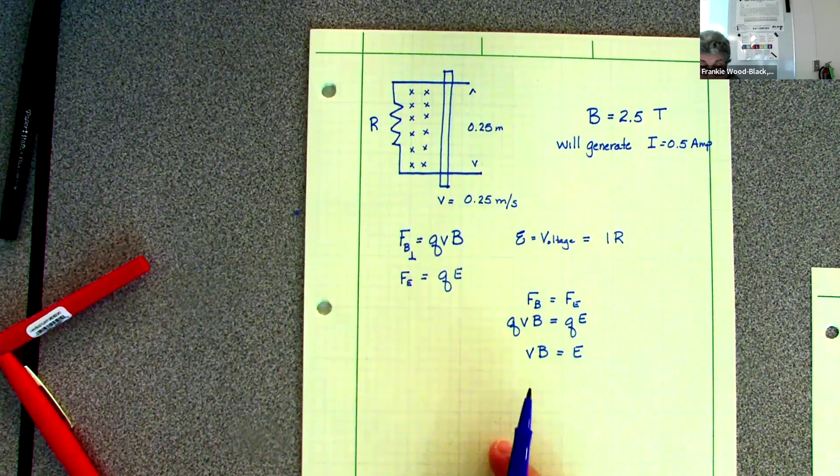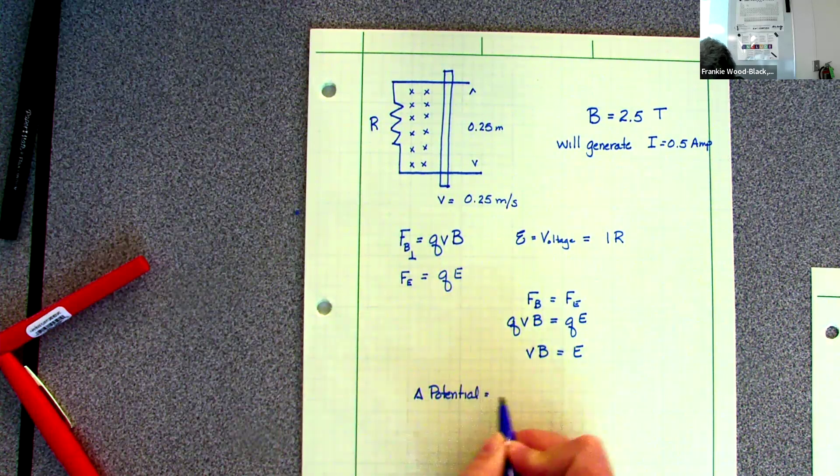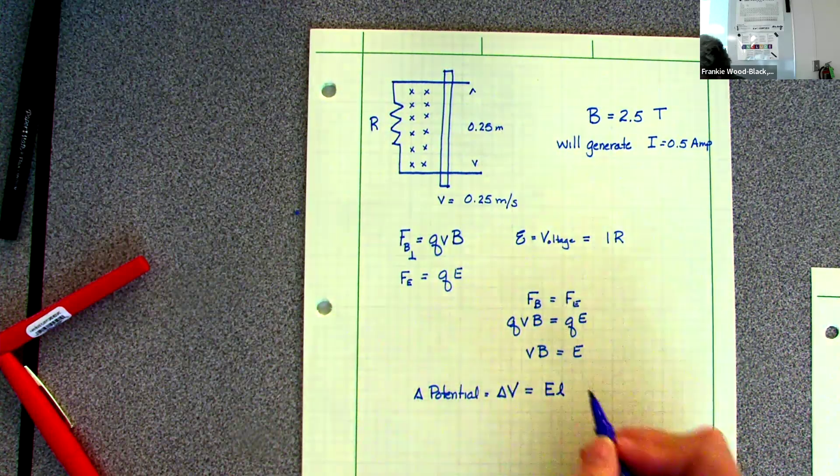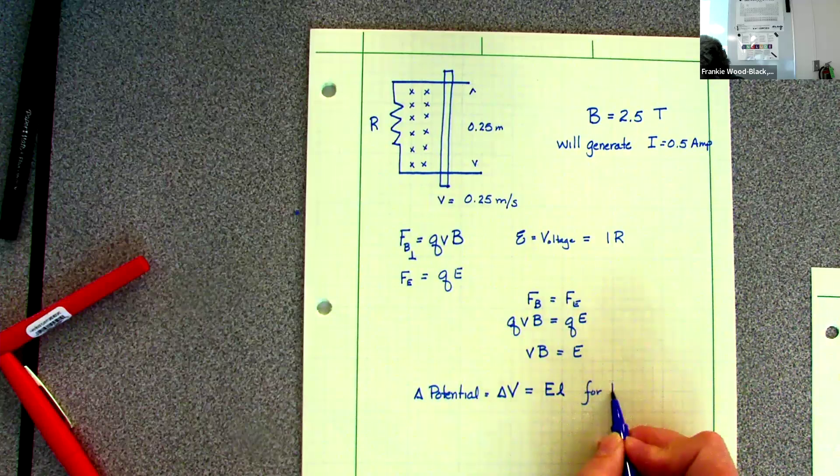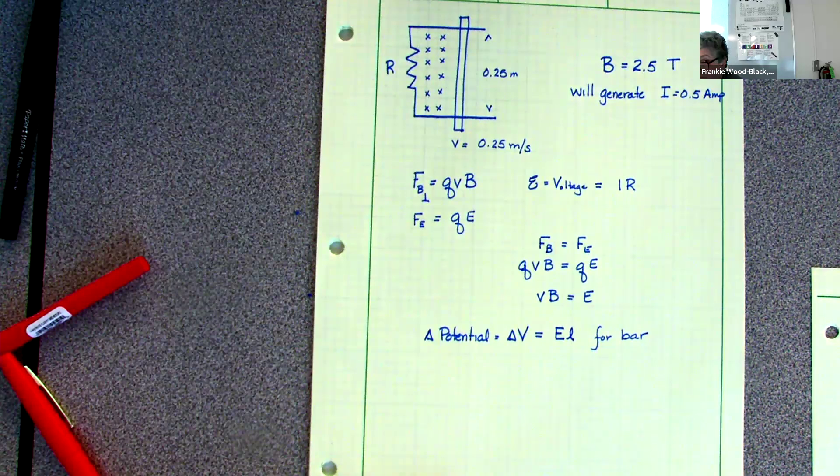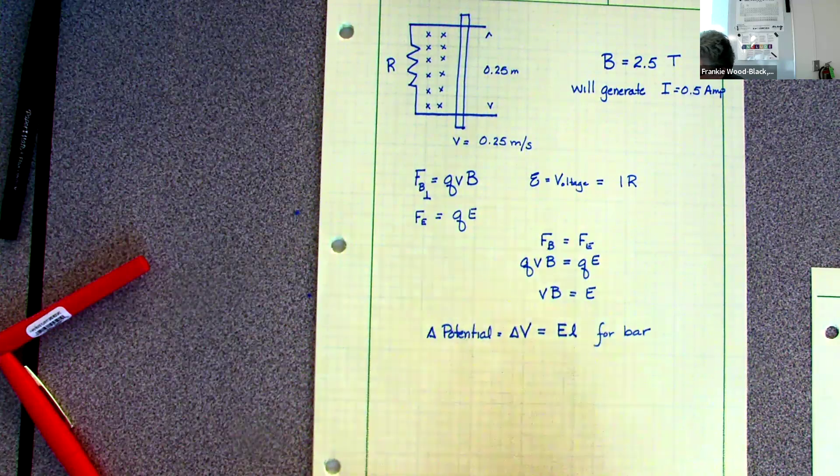So my change in potential, or my change in big V, is equal to E times the length for my bar. And I know it's been a couple of weeks since we did that.